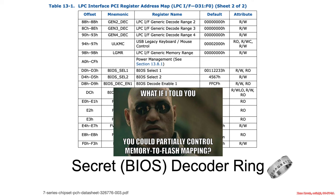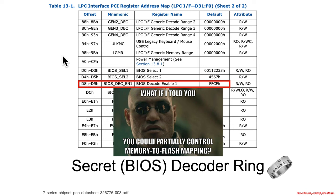We actually saw this before at the very beginning when I was just throwing labs at you even though you couldn't possibly understand them. We said, what if I told you that you could partially control memory-to-flash mapping? In that lab, it was offset D8 and D9 inside the LPC interface, which was the BIOS decode enable — the thing that basically allowed you to unmap certain portions of physical memory to flash access. You couldn't unmap the very end — you couldn't unmap FFFF — but you could unmap something further down. So back then, we were looking at the configuration address space of the LPC device without really knowing what we were doing or why.